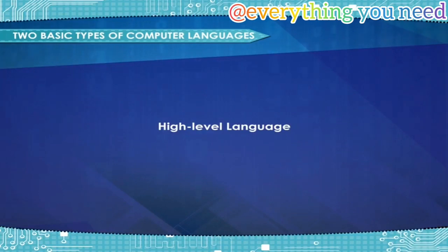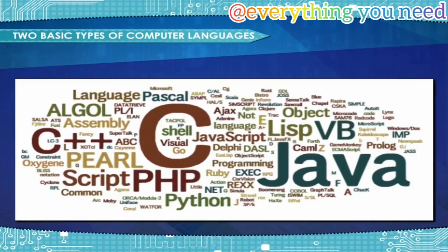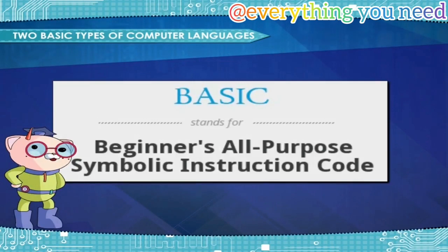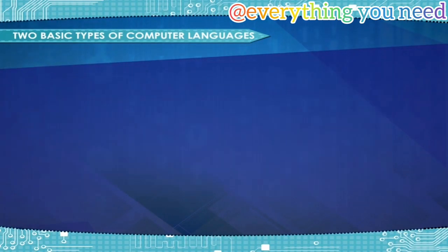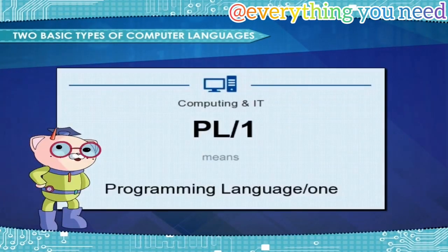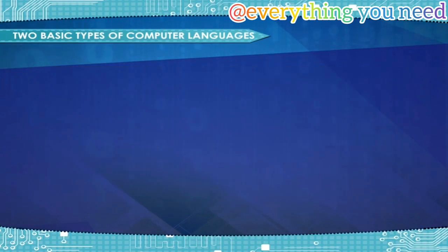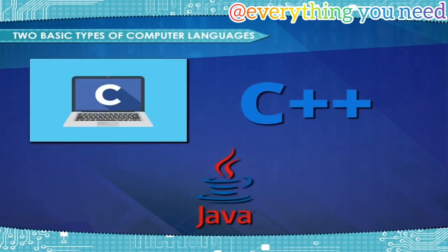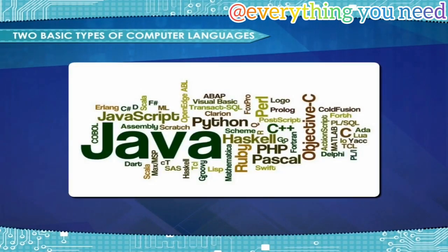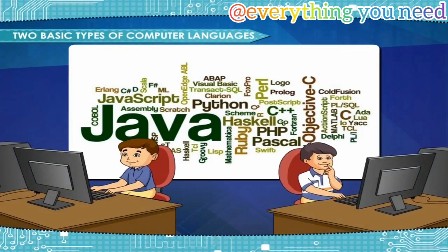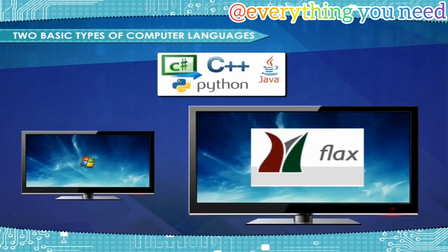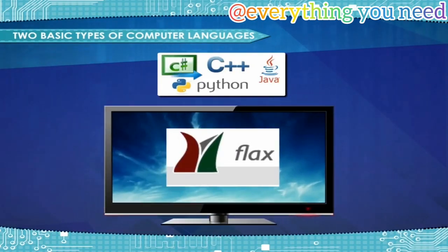High-level language is any language that is independent of the machine. Types of high-level languages include Basic (Beginner's All-Purpose Symbolic Instruction Code), Fortran (Formula Translation), PL-1 (Programming Language Version 1), Algol (Algorithmic Language), C, C++, Java, etc. High-level languages allow a user to give instructions in the English language, which makes them easier to learn. Programs developed on one system can be executed on other systems and will produce the same output.